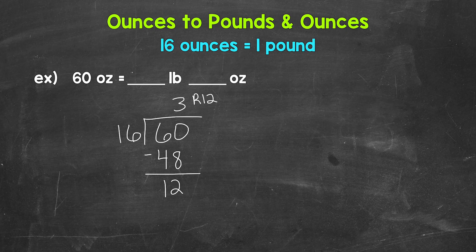That tells us that we have three pounds and 12 extra ounces. So 60 ounces equals three pounds, 12 ounces. And that's our answer.